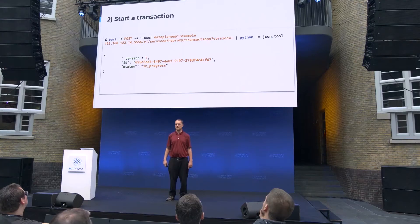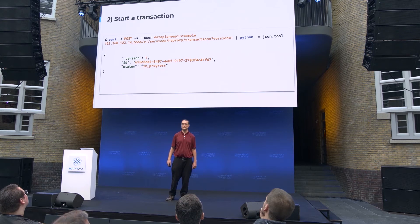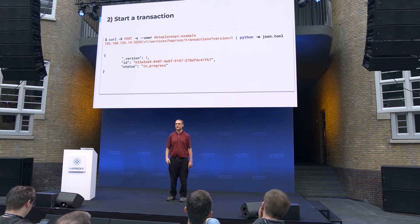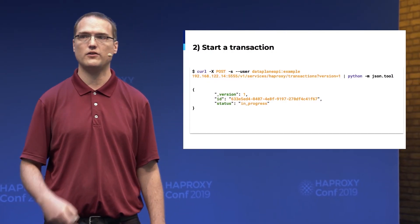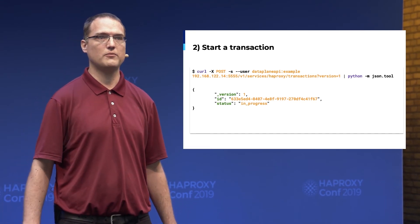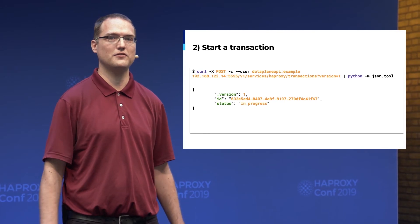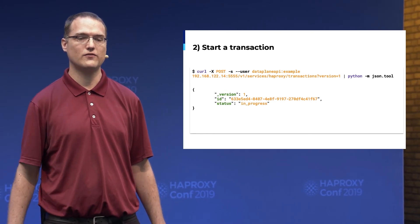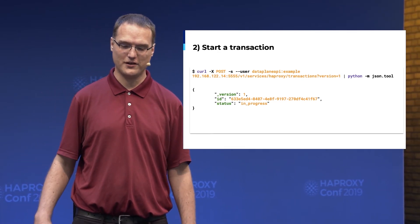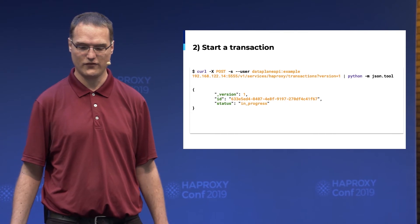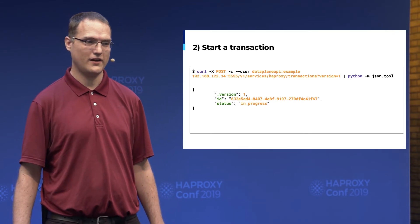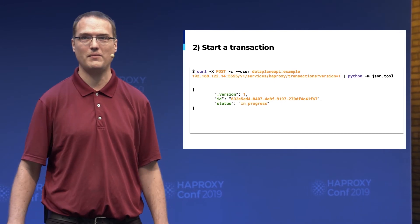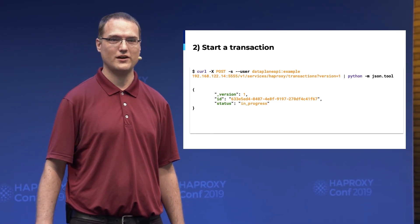Next there's a transaction system. You do not have to use it — all options have a non-transaction equivalent — but a transaction is useful when bundling all your configurations together, such as adding a full new service all at the same time instead of making a bunch of independent requests. You make a POST request with the version number and get back a transaction ID, which you'll use going forward. You can also view all existing transactions and cancel them.